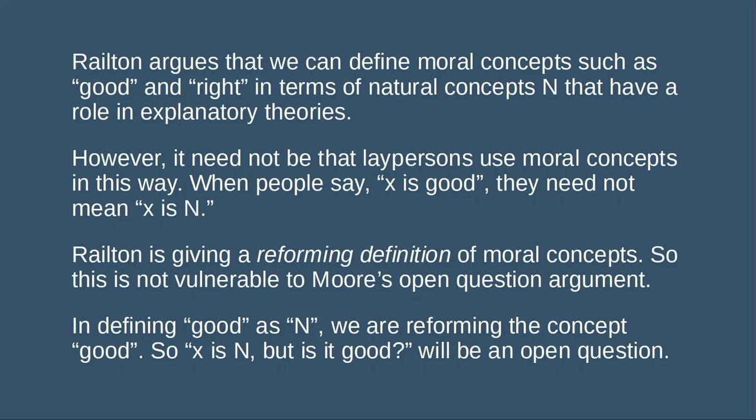Railton is explicitly engaging in a project of conceptual revision. This is an important point because it means that Railton's theory is not going to be vulnerable, or at least not in any obvious way, to semantic problems like Moore's open question argument. So when Railton defines good as n — as this natural property — we're reforming the concept of good. We should expect the question 'x is n, but is it good?' to be an open question, and that's not going to be an objection to Railton's position.